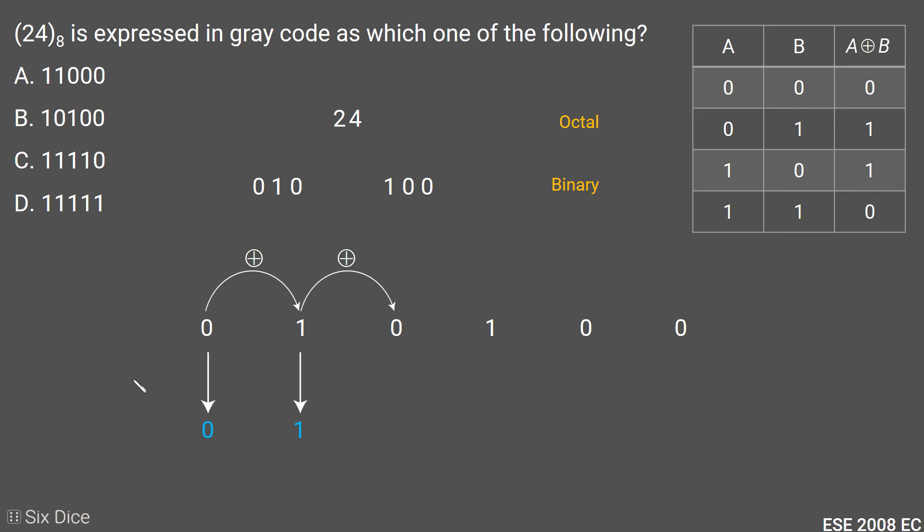Then we will do second and third digit XOR. So we have 1 and 0 for second and third digit, so we will get again 1 in gray code. Then we will perform third and fourth digit XOR, which results in 1. And fourth and fifth digit XOR, which also results in 1, because 1 and 0 will result in 1.